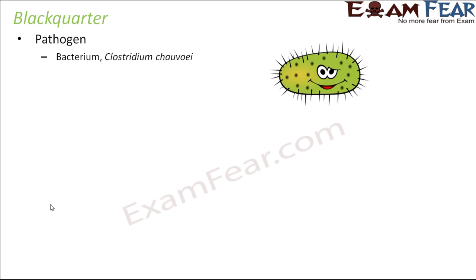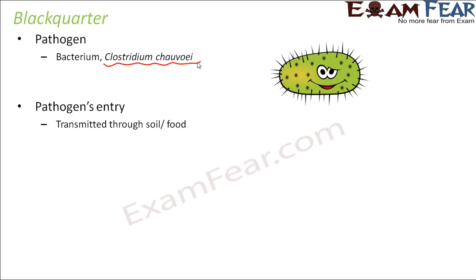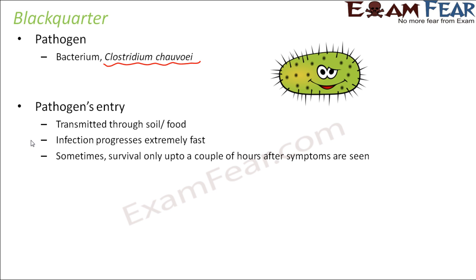The third disease is black quarter. The pathogen is a bacterium called Clostridium chauvoei. This bacterium enters through soil or food — it is present in the soil, and since animals walk on soil without protection, it can enter their body. Once the body is infected, the infection progresses extremely fast, and sometimes survival is only up to a couple of hours after symptoms are seen.